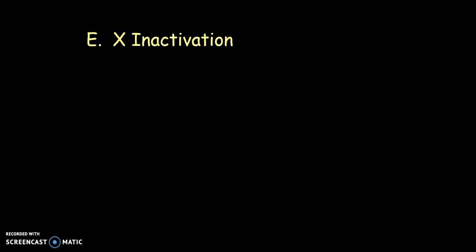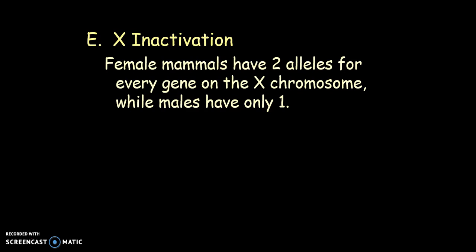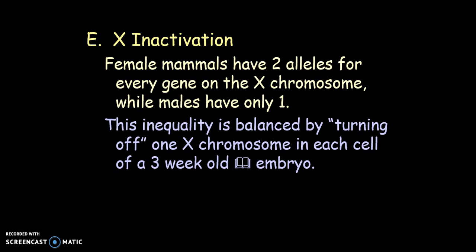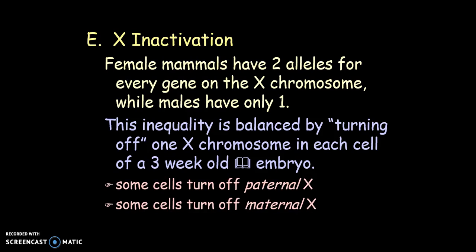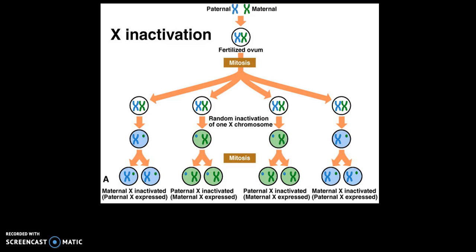X inactivation occurs in mammals. Females have two alleles for every gene on the X chromosome, whereas males only have one. This inequity is balanced by turning off one X chromosome in each cell of a three-week-old embryo — sometimes the paternal X is turned off, sometimes the maternal X. So each cell really only has one functional copy of the X-linked gene. Inactivation appears randomly in early embryo cells, and the millions of cells that descend from these form patches of tissue that may be genetically and phenotypically different from adjacent tissue, creating a mosaic. Females are genetic mosaics for heterozygous genes on the X chromosome, and the inactivated chromosome forms the Barr body.